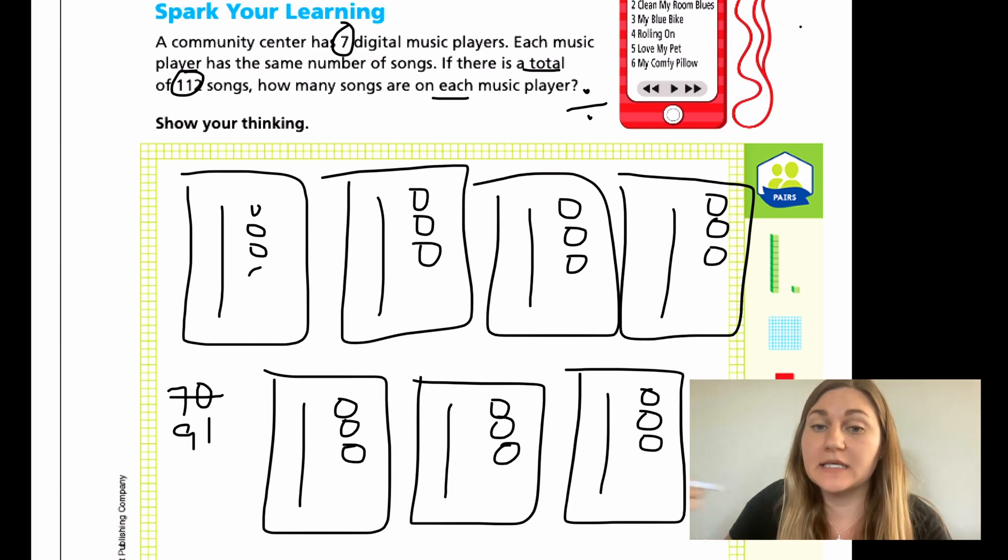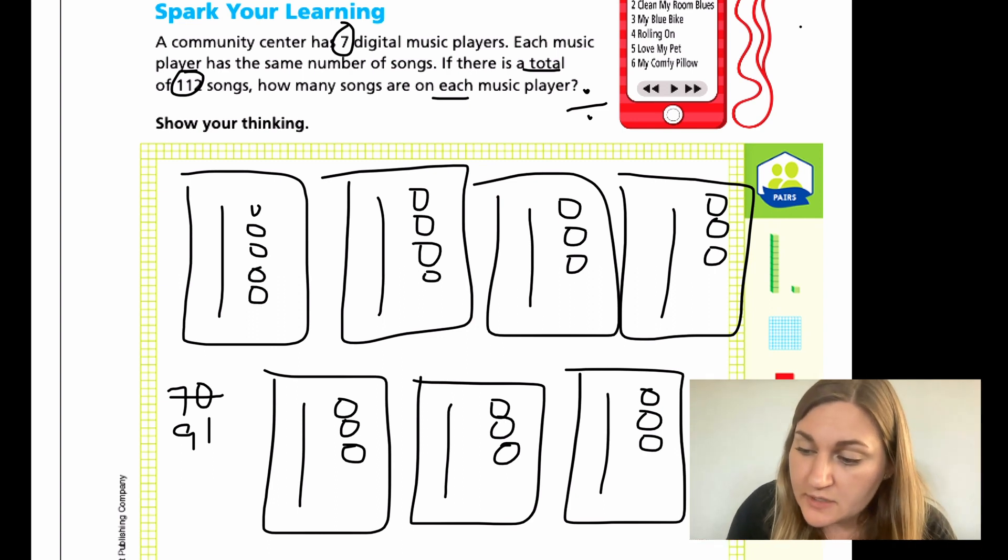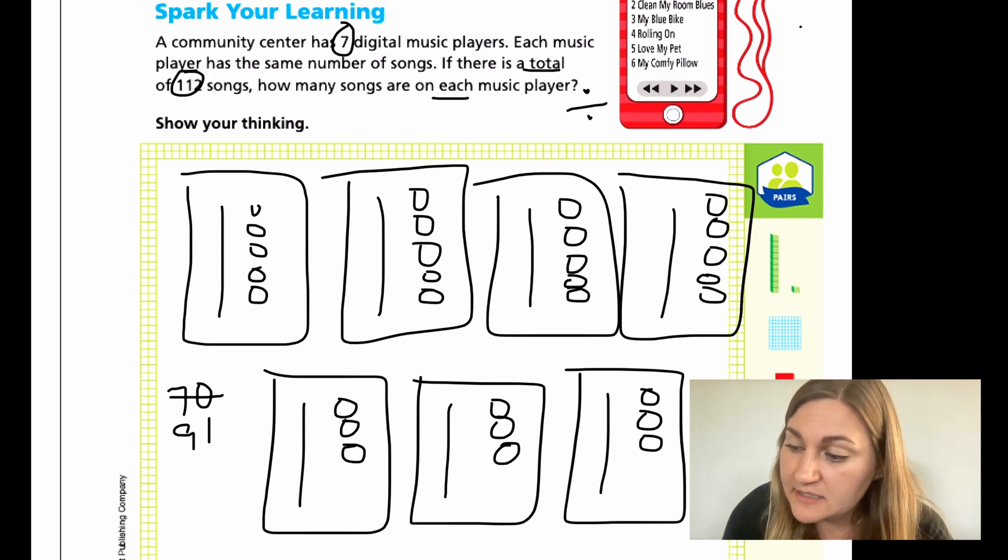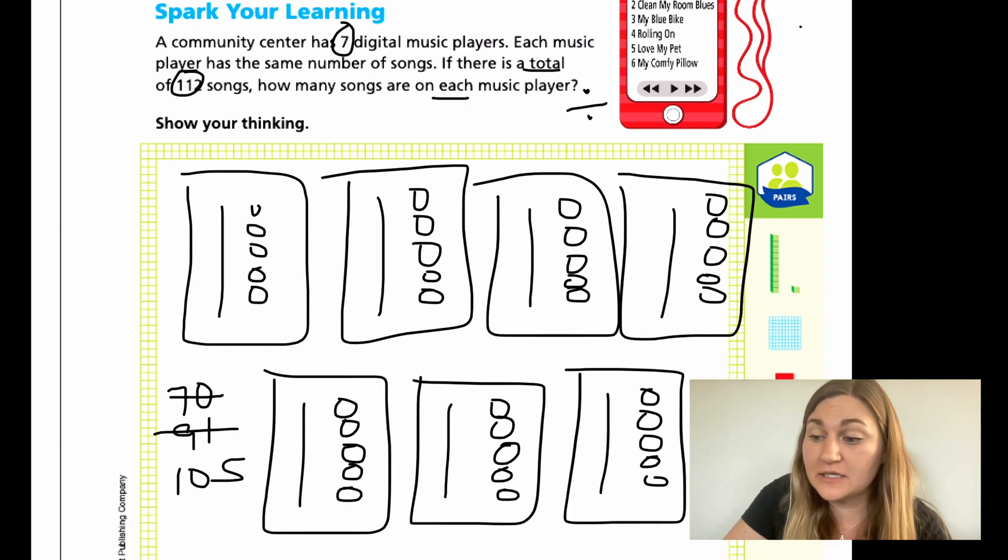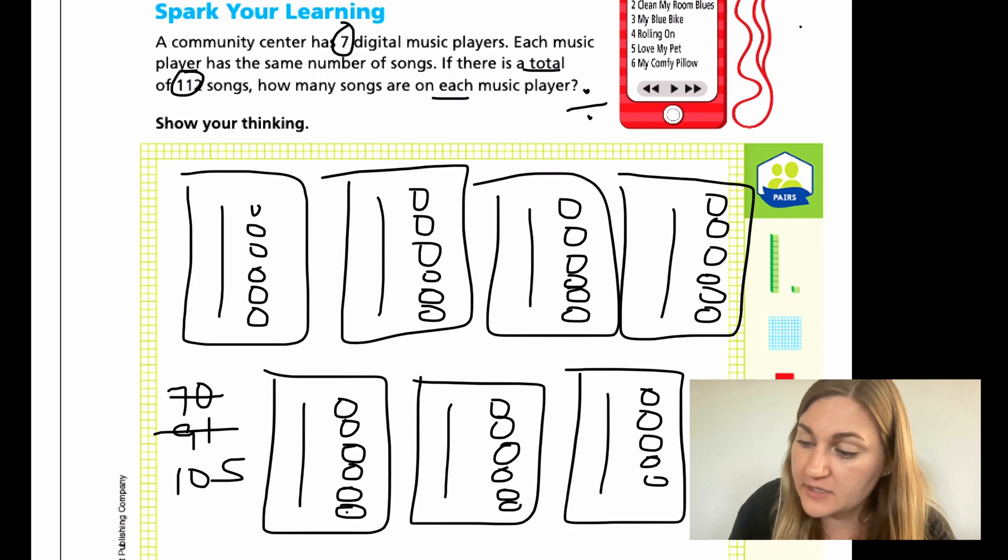So I stopped at 91, so I'm going to keep counting at 92. The teacher counts from 92 to 105, adding two circles to each rectangle. All right, I am pretty close. I think I'm just going to keep going one at a time. The teacher counts from 106 to 112, adding one final circle to each rectangle. There we go.